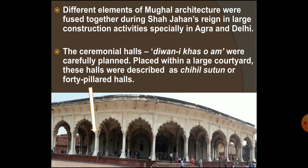During Shah Jahan's reign, various components of Mughal architecture were combined together to produce a pleasing blend and mixture. Shah Jahan in particular was very interested in constructing buildings, and therefore several construction activities took place during his reign, especially in Agra and Delhi. There were huge halls for private and public audience to witness various activities and functions.